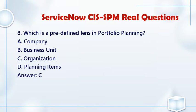Question 8: Which is a predefined lens in portfolio planning? a. Company. b. Business unit. c. Organization. d. Planning items. Answer: C.